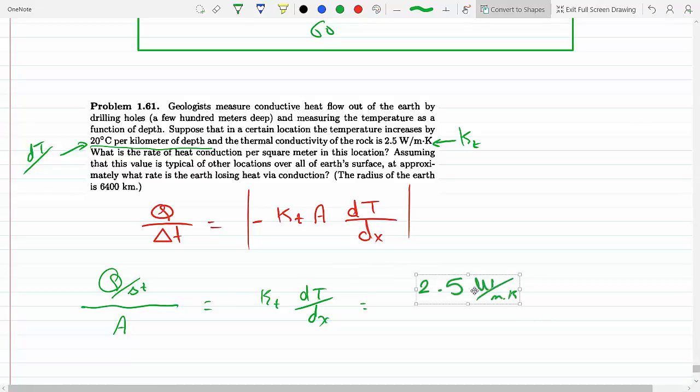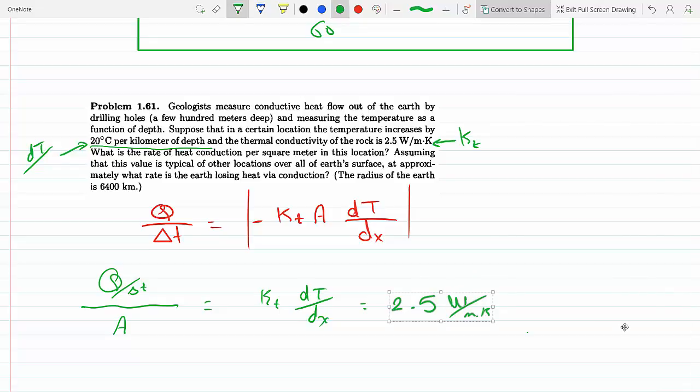So it's right here, dT over dx or delta T over delta x. Okay, so this is 2.5 watts per meter Kelvin times dT over dx. As we said, 20 degrees, so per meter Kelvin.